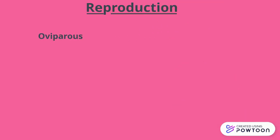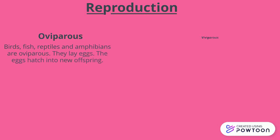There are three types of animals according to reproduction. Oviparous: birds, fish, reptiles, and amphibians are oviparous. They lay eggs, and the eggs hatch into new offspring.